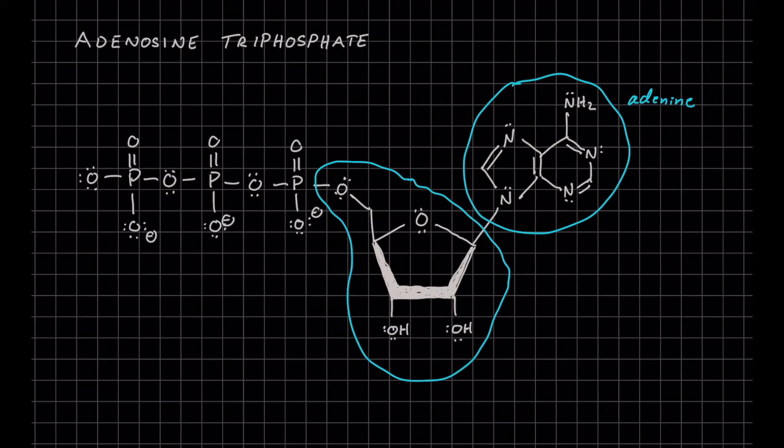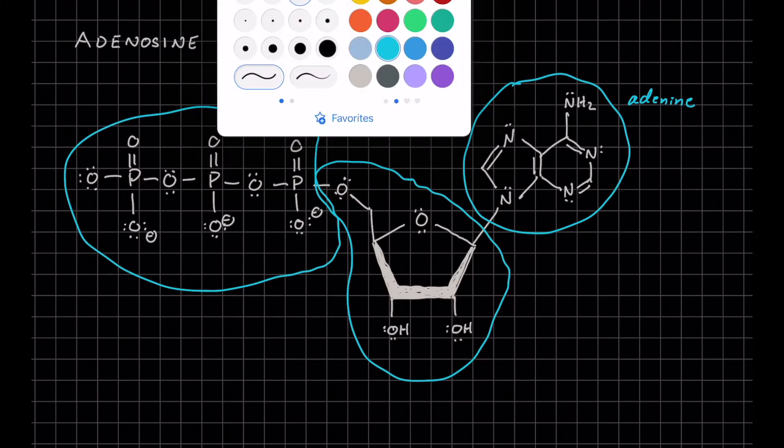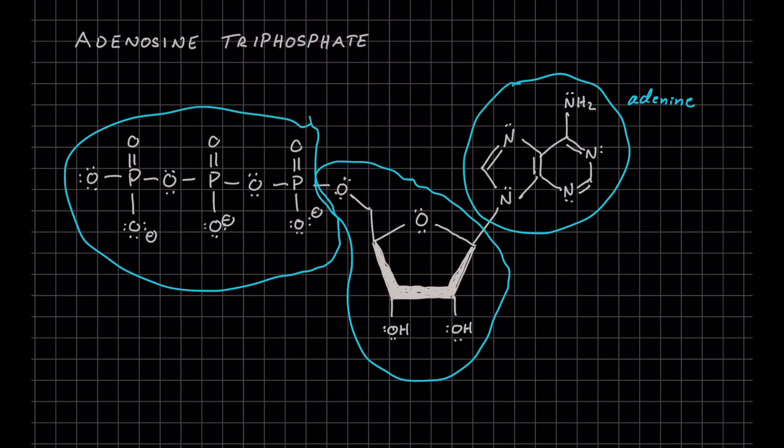And then finally we'll have three phosphate groups. And based on their separation from this ribose ring, we're going to label them alpha, beta, and gamma, those first three letters in the Greek alphabet.